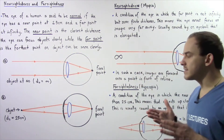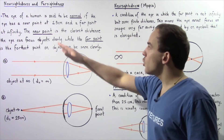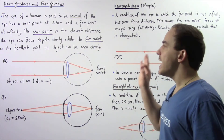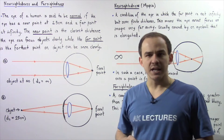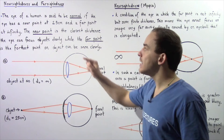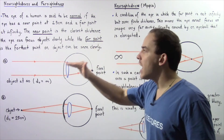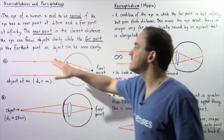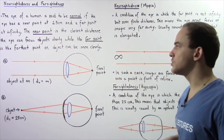Let's begin our discussion by defining what a normal eye is. The eye of a human is said to be normal if the eye has a near point of 25 centimeters and a far point at infinity. We define the near point as the closest distance the eye can focus objects clearly, while the far point is the farthest point an object can be seen clearly.